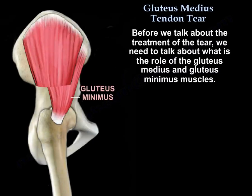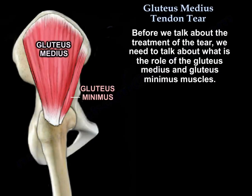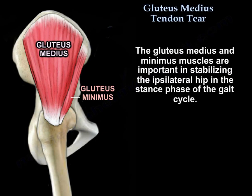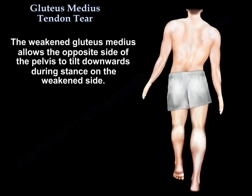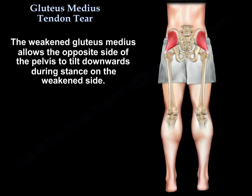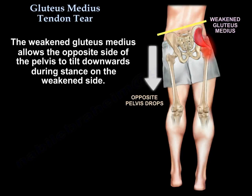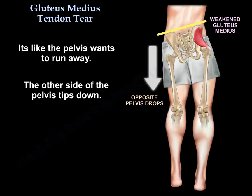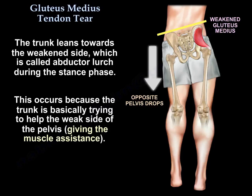Before talking about treatment, we need to understand the role of the gluteus medius and minimus muscle. They are important in stabilizing the ipsilateral hip in the stance phase of the gait cycle. A weakened medius allows the opposite side of the pelvis to tilt downwards during stance on the weakened side — the trunk leans towards the weak side, which is called abductor lurch.